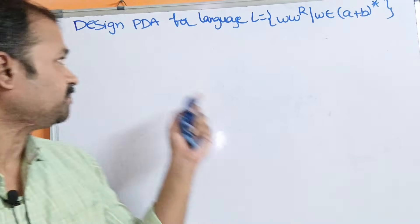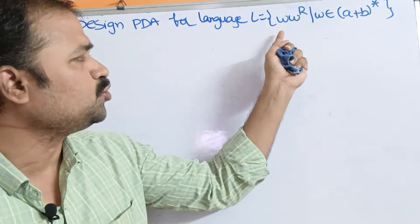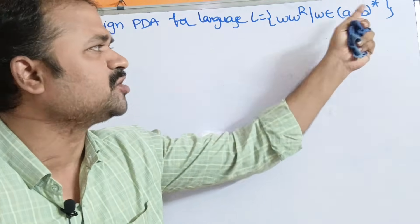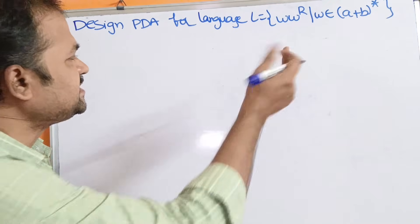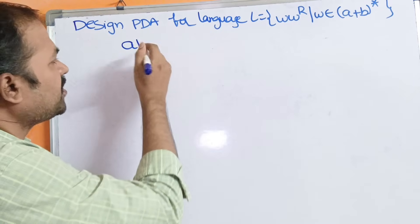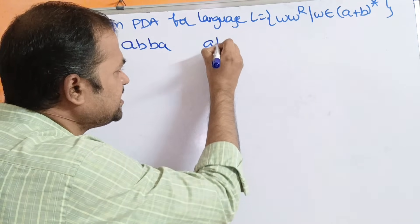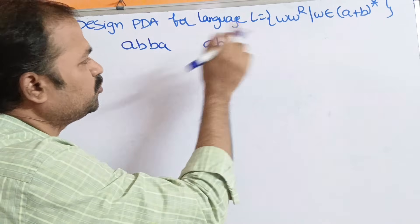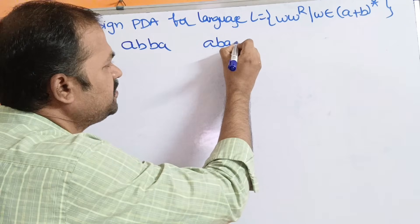Let us see this example. Design a PDA for the language L equal to WW^R such that W belongs to (A+B)*. Let W be AB, then W^R will become BA. Let the string be ABA, then the reverse of W, that is W^R, will become ABA only.